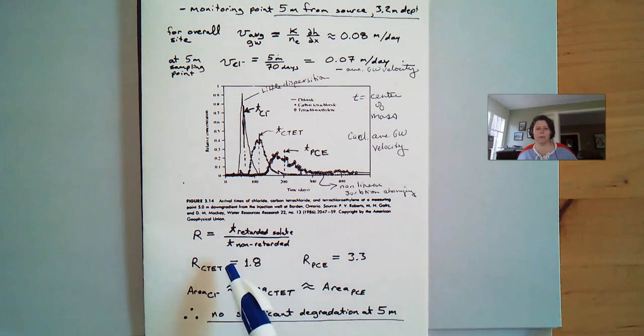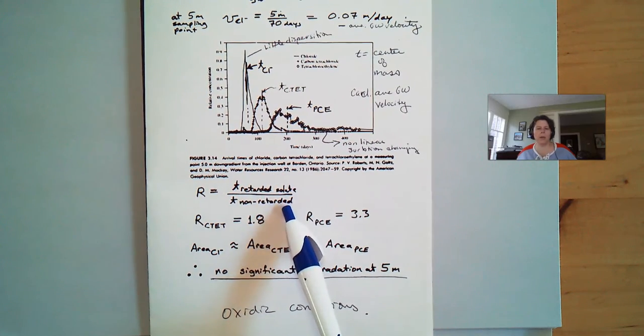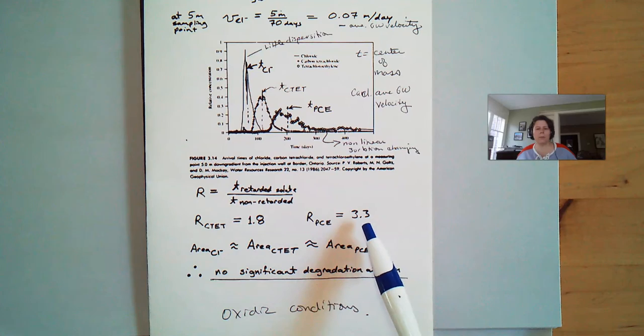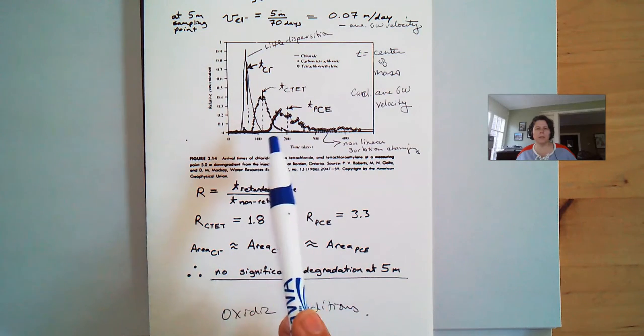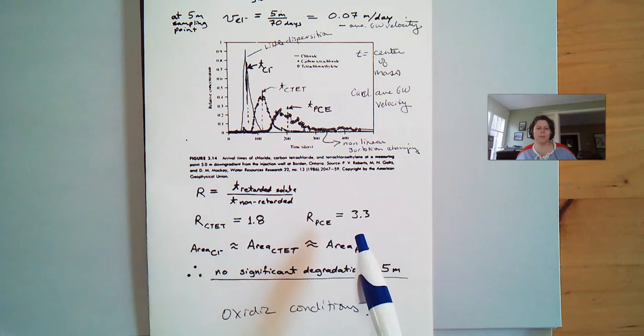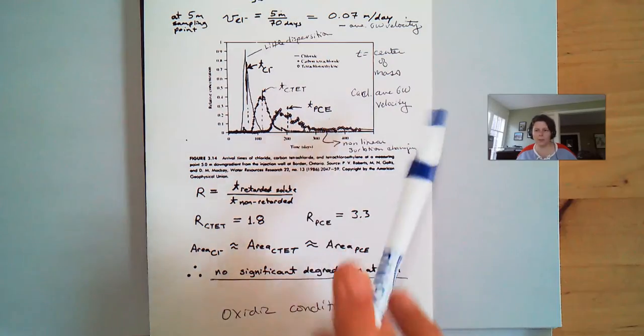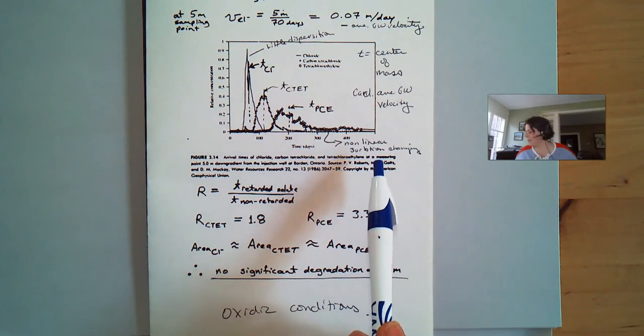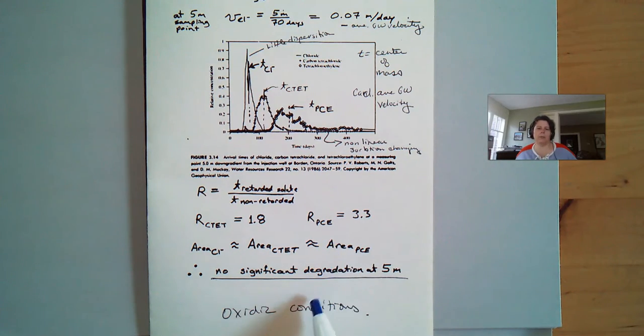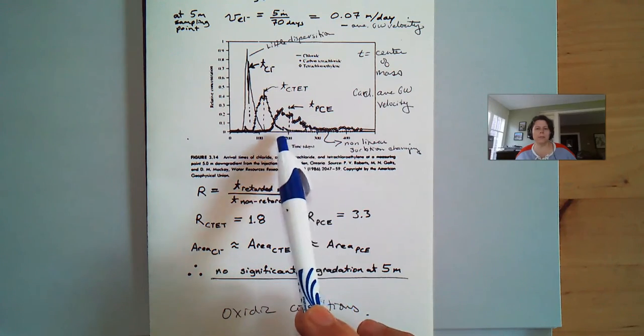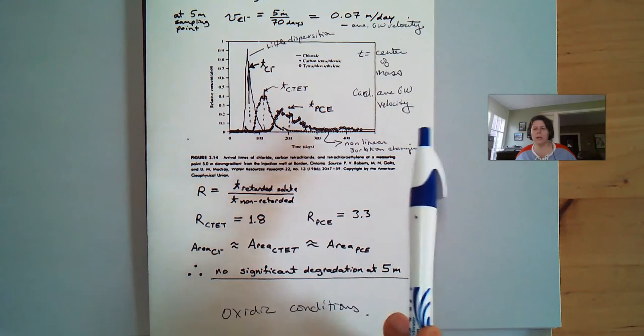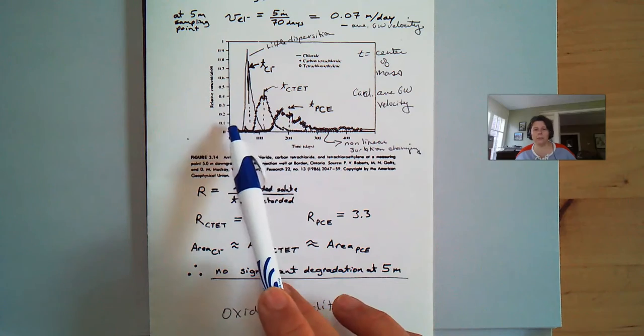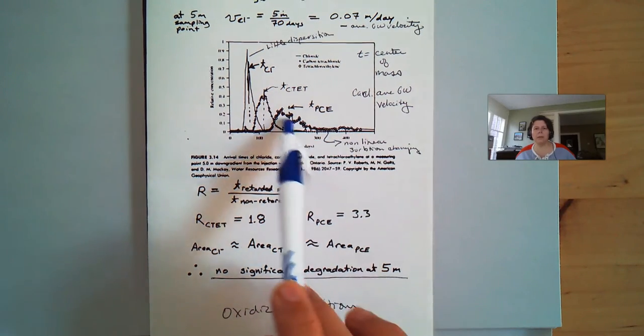So if we take that, remember we talked about how to figure out our retardation. We take the time of the retarded solute over the unretarded. For carbon tet, we get 1.8, and for PCE we get 3.3. And then if we took the areas under the curves of each one of these - if we look at the area underneath each one of these, the areas are approximately the same. So there is no significant degradation at 5 meters. These are under oxic conditions. And if you guys remember when we talked about these compounds, they really only degrade under anaerobic conditions. So under aerobic or oxic conditions, these things just flow through the system.